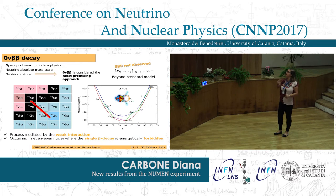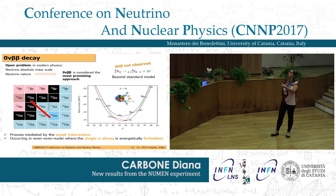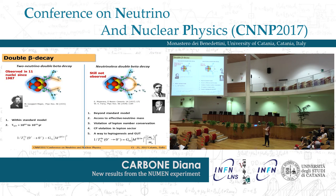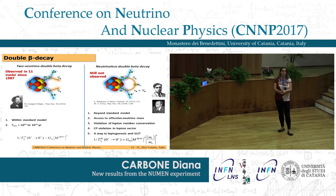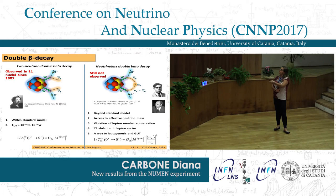Just to briefly remind you — since in these days we heard a lot about the importance of the search for neutrino-less double beta decay — it is a promising approach to obtain information about the neutrino nature and the neutrino mass scale. Only a few nuclei are candidates for this observation. We already heard about the fundamental differences between two-neutrino double beta decay, which was already observed in some nuclei, and neutrino-less double beta decay and the very important consequences of its discovery.